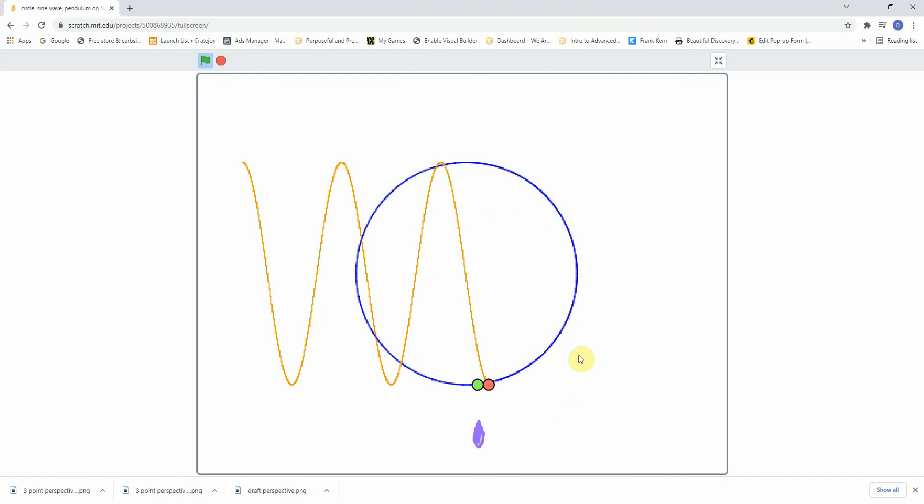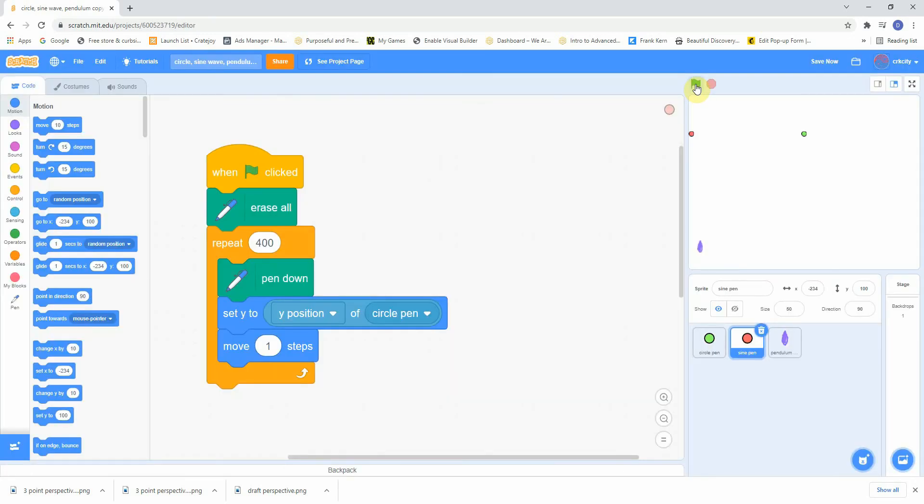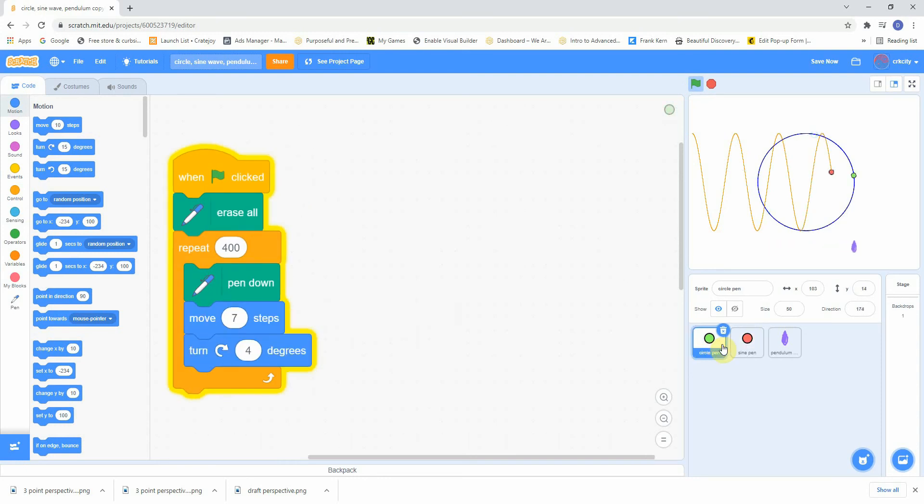Now let's look back at our diagram, which I also did in simple Scratch code. Notice that the sine wave goes just as high as the circle because I'm exactly matching the Y coordinate of the circling pen. And the pendulum's exactly matching the X position of the circling pen.